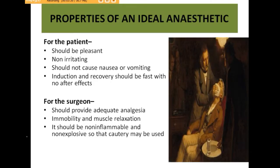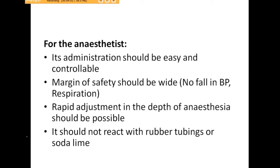Properties of an ideal anesthetic for the patient: it should be pleasant, non-irritating, should not cause post-op nausea and vomiting, and induction and recovery should be very fast with no after-effects. For the surgeon, it should provide adequate analgesia, immobility, muscle relaxation, and be non-inflammable and non-explosive so cautery can be used to stop bleeders. For the anesthetist, it should be easily administered, controllable, have a wide margin of safety with no effect on vitals like blood pressure, respiration, and cardiac activity, allow rapid adjustment of depth, and not react with rubber tubing or soda lime.